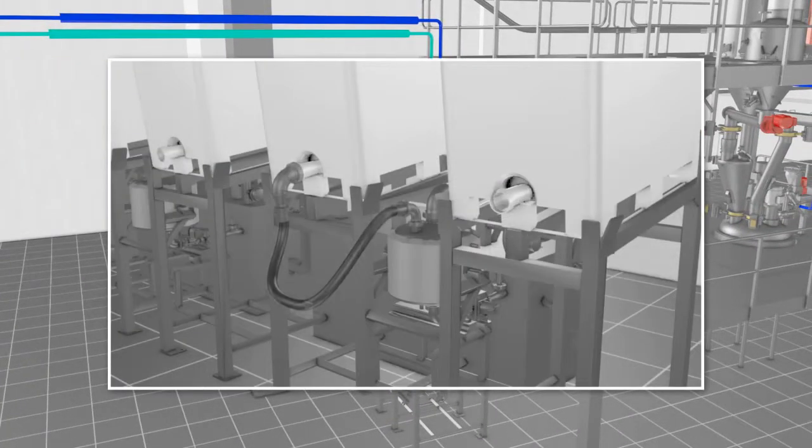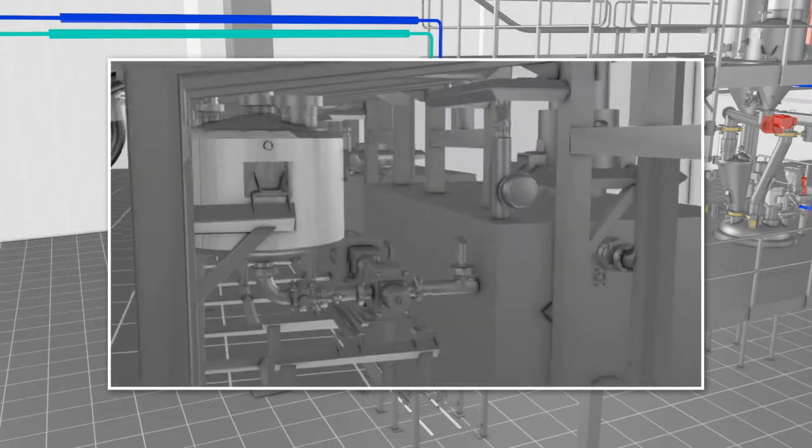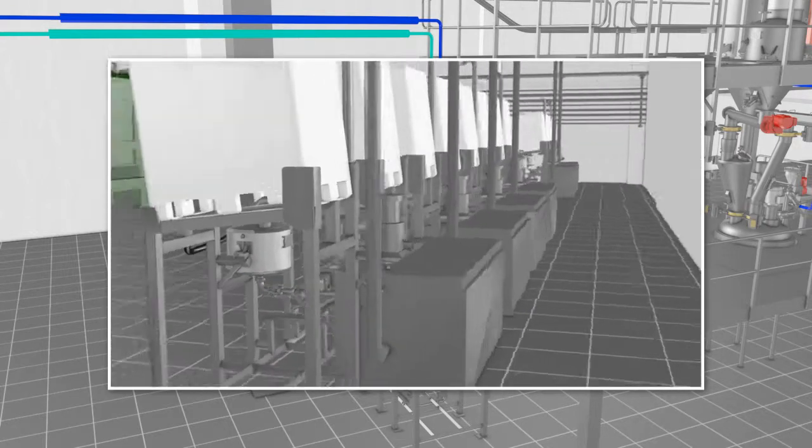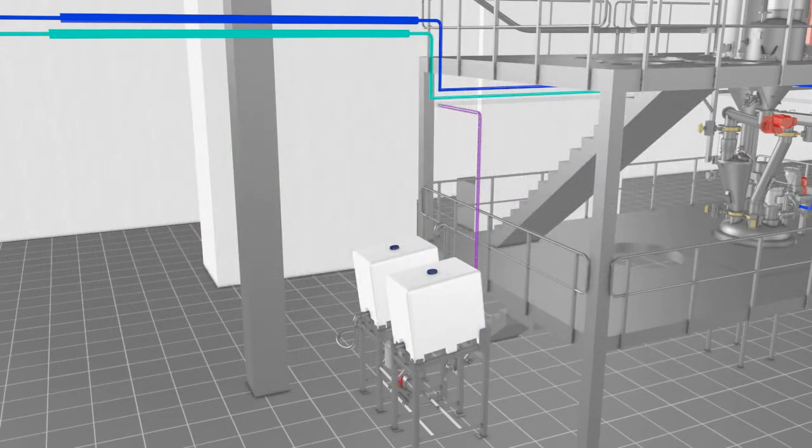For the smaller amounts of liquid additives required in the recipes, JTEC designed innovative IBC discharging stations. These stations are able to dose with extreme accuracy and are designed according to the latest hygienic guidelines.